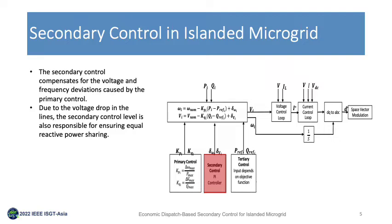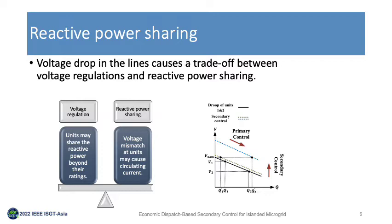For reactive power sharing, the voltage drop in the lines causes the terminal voltage and hence the reactive power at each unit to be measured differently. Therefore, a unit may share reactive power beyond its rating. The secondary control level restores voltage to its nominal value; however, if it ensures equal reactive power sharing, a voltage mismatch occurs and causes circulating currents between units.